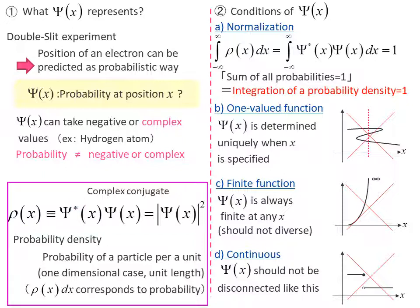Strictly speaking, this function corresponds to the probability density, not the probability itself. For one-dimensional problems, it represents the probability per unit length. The probability density ρ(x) times the infinitesimal distance dx is defined as the probability at position x.